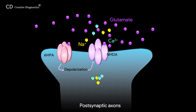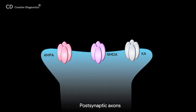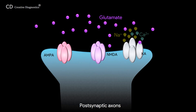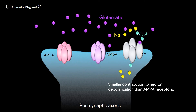Specifically, the NMDA receptor is a coincidence detector. Opening of the channel requires the postsynaptic cell to be depolarized to remove the physical occlusion by magnesium when glutamate is binding to the receptor. Kainate receptors also mediate a postsynaptic current through the entry of sodium and, to a smaller extent, calcium, resulting in a smaller contribution to neuronal depolarization than AMPA receptors.